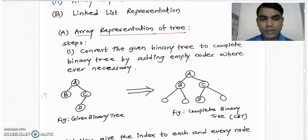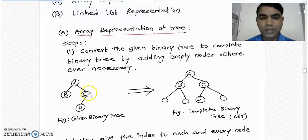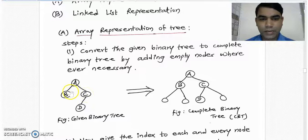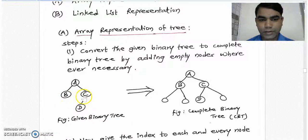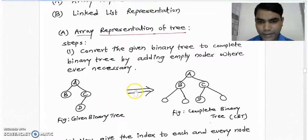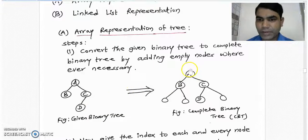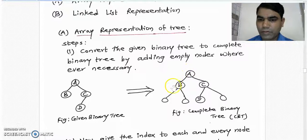Consider this is the given binary tree to you to represent it by array representation. Now to convert this binary tree, we must add empty nodes to node B towards left hand side as well as right hand side and one node to the right side of node C. So after converting it to the complete binary tree, the complete binary tree looks like this which consists of nodes and some empty nodes.